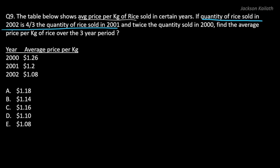It's mentioned that the quantity of rice sold in 2002 is 4/3 the quantity of rice sold in 2001. Now if I take the quantity in 2001 as x, then the quantity sold in 2002 will be equal to 4/3 times x as per this statement. It's also mentioned that the quantity sold in 2002 is twice the quantity sold in 2000. So in 2000 it should be half of this, which will be 2/3 times x.